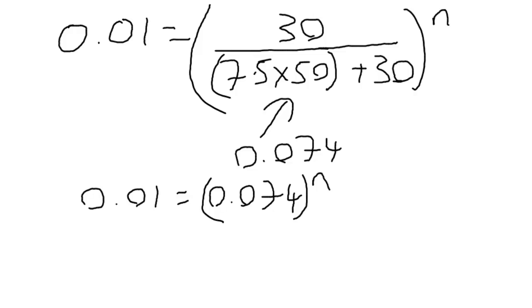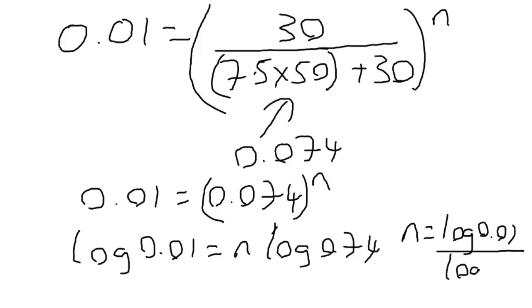And to solve that, we need to use our rules of logs. Take log of both sides. So the log of 0.01 equals n times the log of 0.074. Well, if we rearrange that, n equals log of 0.01 divided by the log of 0.074. And we get an answer of 1.77.